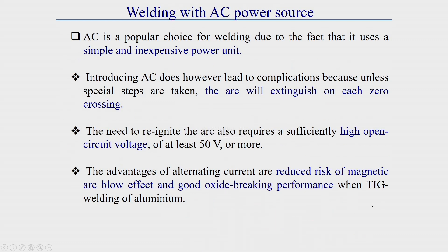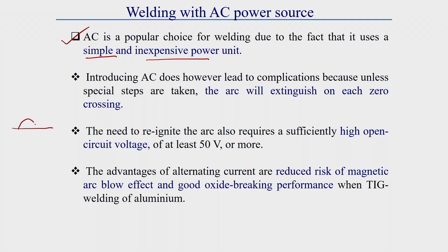AC power source is a popular choice because it is simple and inexpensive. However, the main problem is that AC current has zero crossings each cycle — where the current becomes zero — meaning the arc extinguishes at every cycle.